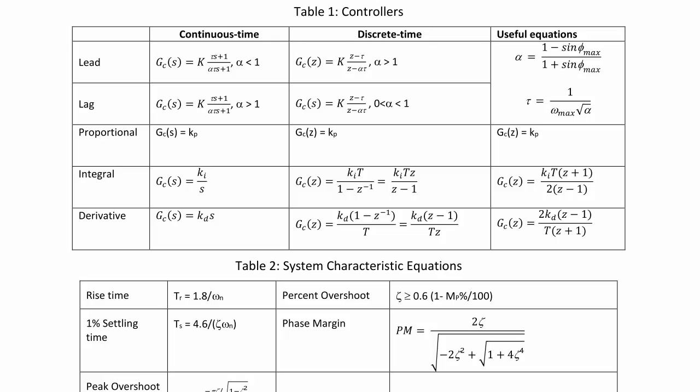Here we have Table 1. Recall that for continuous time, a lead controller is k times tau s plus 1 over alpha tau s plus 1 where alpha is less than 1, but in discrete time, it is k times z minus tau over z minus alpha tau where alpha is greater than 1.